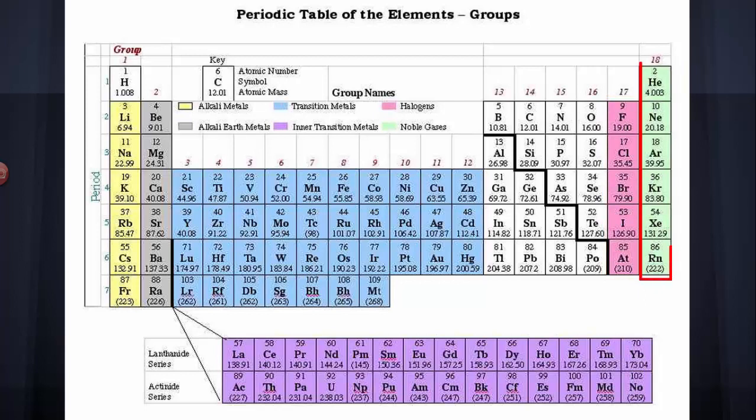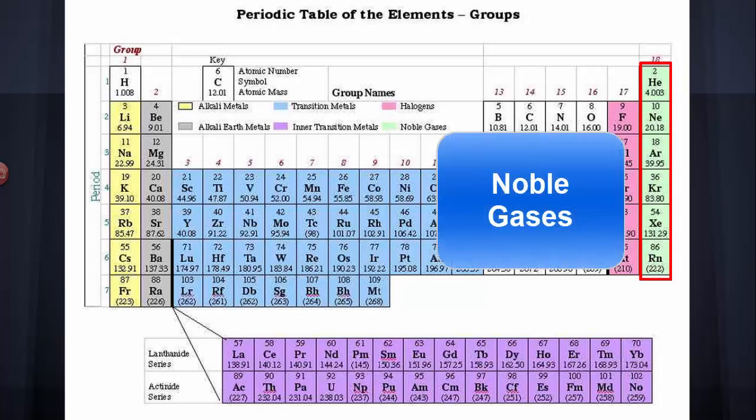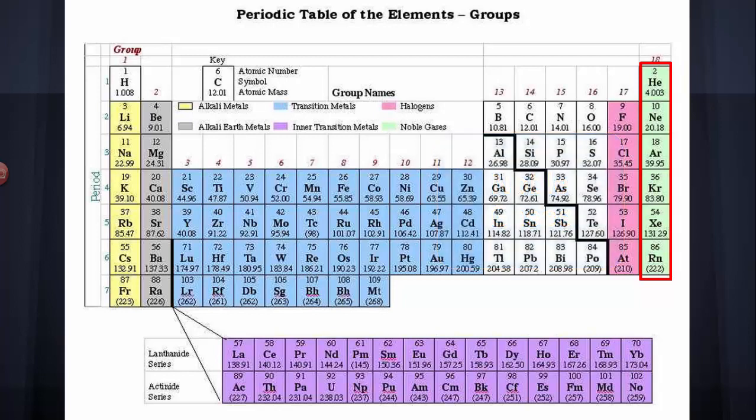Finally, we have group 18: helium, neon, argon, krypton, xenon, and radon. Those are called the noble gases, and they don't react. They're called noble because they don't mix with the common elements. They tend to be unreactive.